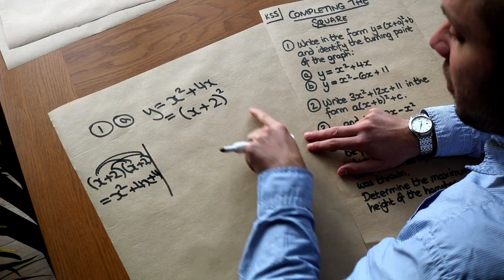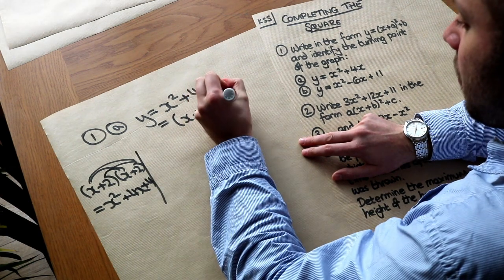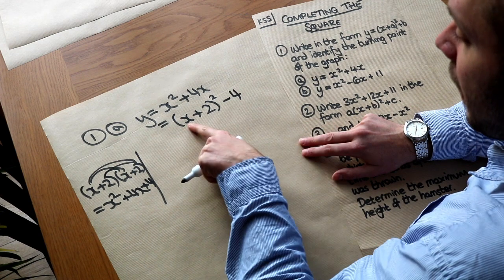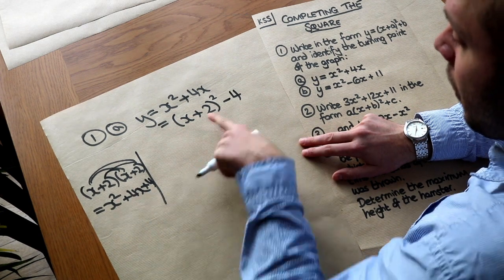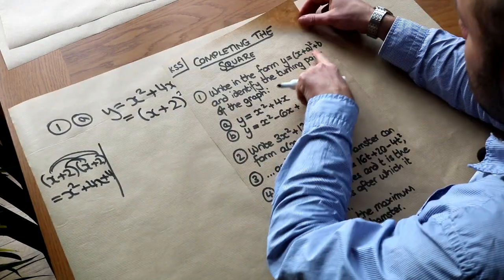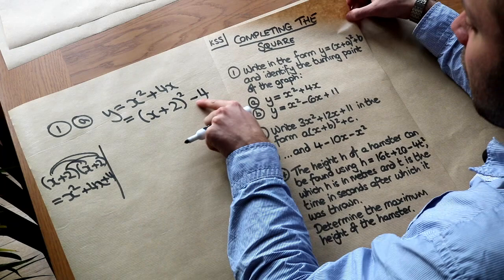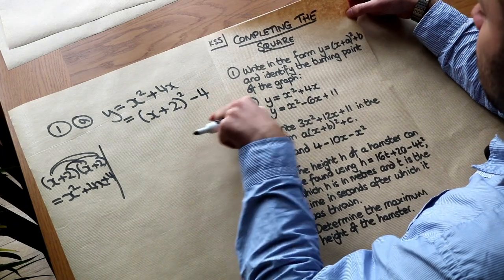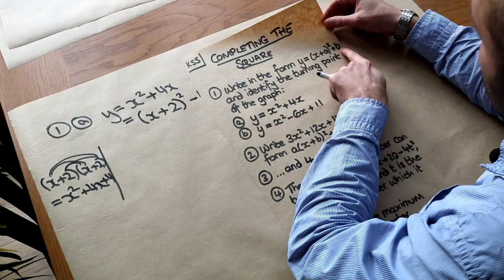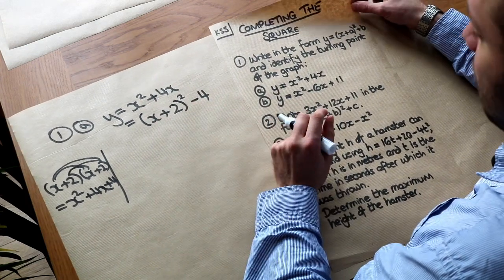We only want x squared plus 4x, not the plus 4, so we subtract 4 to cancel it out. That gives x squared plus 4x plus 4 minus 4, which is just x squared plus 4x. Note that the answer has minus 4 where the form says plus b — that's fine because we could equivalently write plus negative 4.